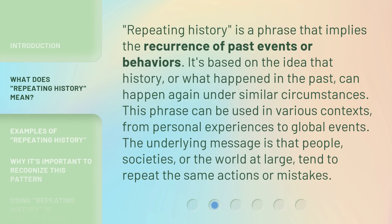Repeating history is a phrase that implies the recurrence of past events or behaviors. It's based on the idea that history, or what happened in the past, can happen again under similar circumstances. This phrase can be used in various contexts, from personal experiences to global events. The underlying message is that people, societies, or the world at large, tend to repeat the same actions or mistakes.